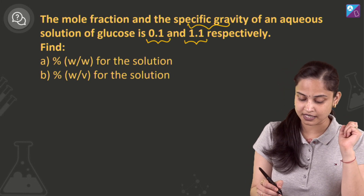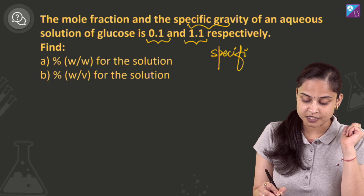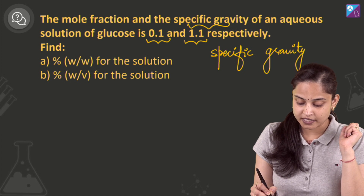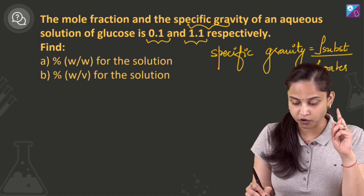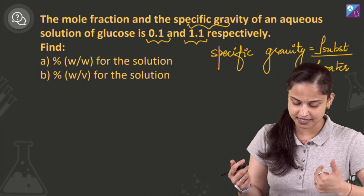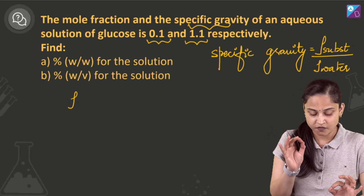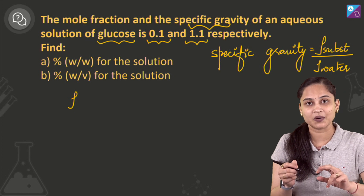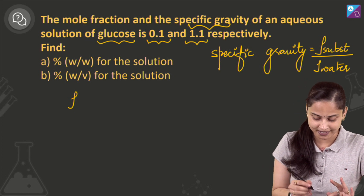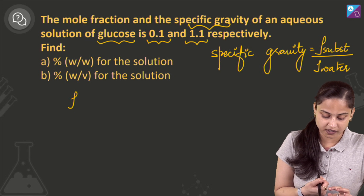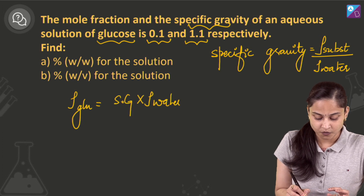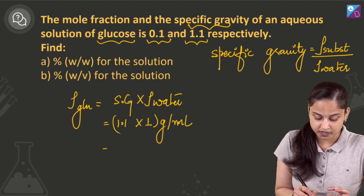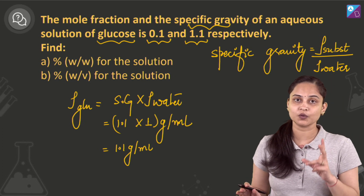We have been given specific gravity. Specific gravity equals the density of the substance divided by the density of water, and density of water is 1 gram per ml. So, the density of the glucose solution equals specific gravity multiplied by density of water, which is 1.1 multiplied by 1, giving us 1.1 gram per ml.